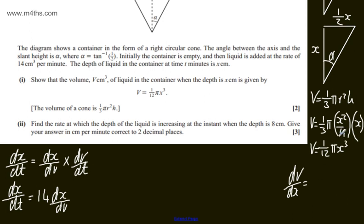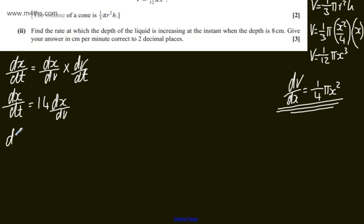multiplying down by the power and dropping the power by 1. That will give me one quarter pi x squared. So that is an expression now for dv dx. So we can say that dx dt will be equal to 14, and we need to multiply this now by the reciprocal.